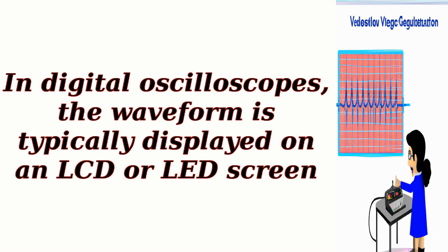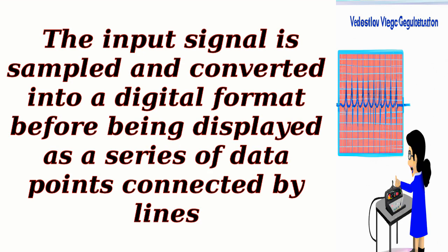In digital oscilloscopes, the waveform is typically displayed on an LCD or LED screen. The input signal is sampled and converted into a digital format before being displayed as a series of data points connected by lines.